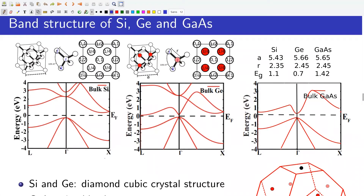Silicon and germanium have a diamond cubic crystal structure. The diamond cubic crystal structure can be imagined as a cube with an atom at each corner and each face center, like in a face-centered cubic crystal. In addition, four out of the eight tetrahedral voids are occupied by an atom. Each atom is tetrahedrally coordinated. This is the unit cell, this is the atomic coordination, and this is the top view of the unit cell.